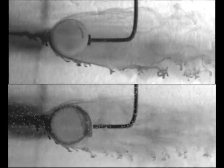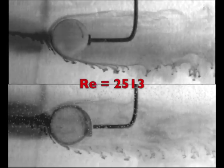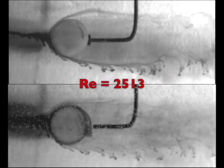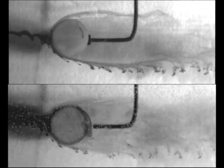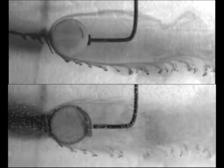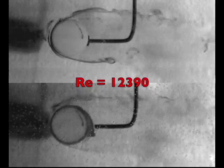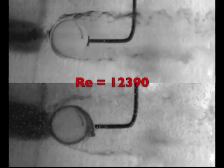Drag can be observed qualitatively by the size of the wake behind the cylinder, with a larger wake region representing higher drag. The size of the wake is directly influenced by the point of separation around the object. The earlier the separation point, the greater the drag.